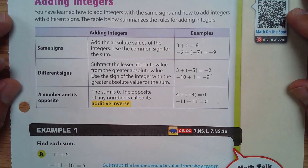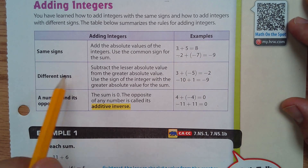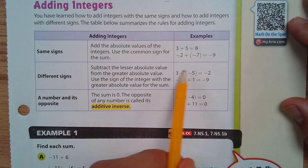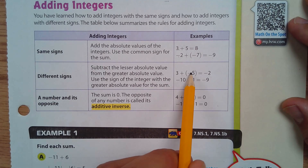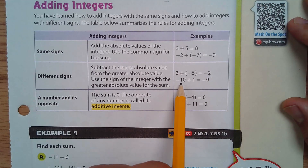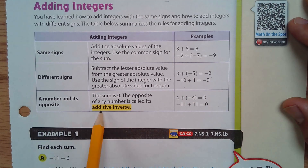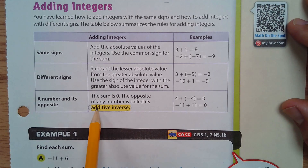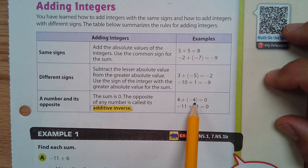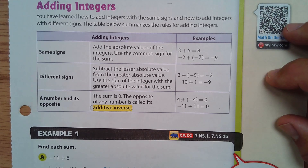To review our rules: if we have the same sign, we add the numbers and the sign stays the same. If we have different signs, we subtract the two numbers and keep the sign of the number with the larger absolute value. For example, five has a larger absolute value than three, so the answer is negative two; ten has a larger absolute value than one, so the sign of the answer is negative. An additive inverse is a number that when added to another makes zero — for example, four and negative four, or negative eleven and positive eleven.